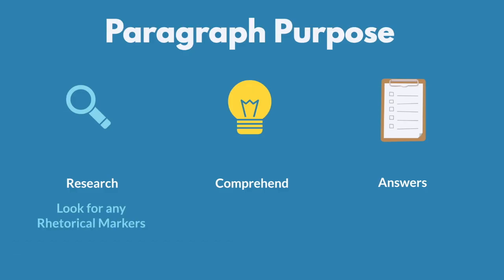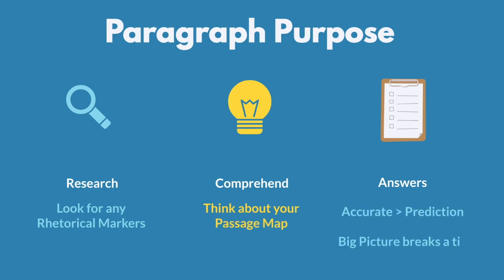So we're looking for rhetorical markers and thinking about our passage map. We care more about accuracy than about our prediction, but if we have two accurate answers, we'll let the big picture break the tie.